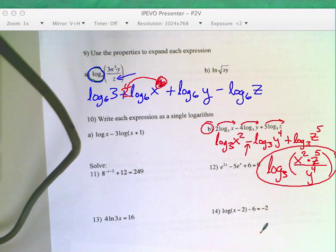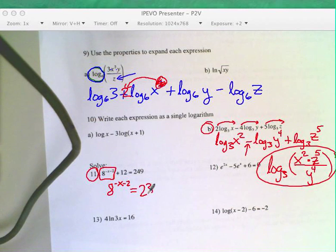All right, and then number 11. With this exponential problem, your goal in life is to get this guy by itself first. So 8 to the negative x minus 2. Subtract 12 from both sides. You get 237. And now you have to answer the question, how do you undo an exponent with a base of 8?